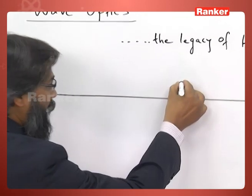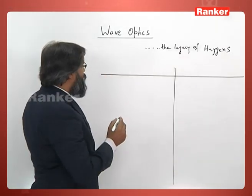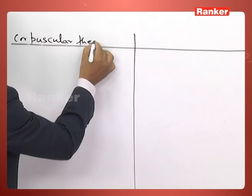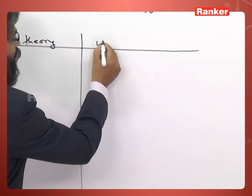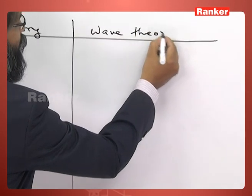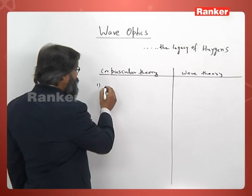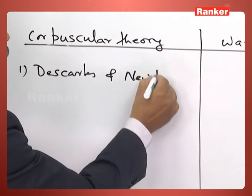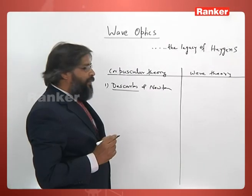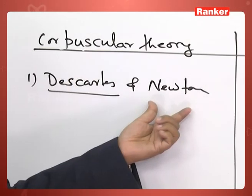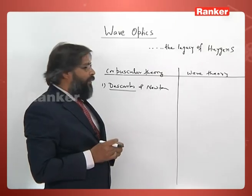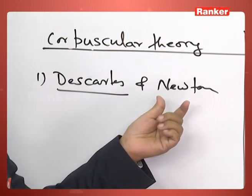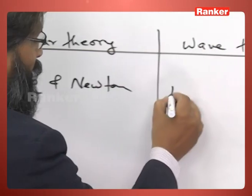We have two categories of theories: corpuscular theory and wave theory. The founders of corpuscular theory were Descartes and Newton. First, Descartes developed corpuscular theory, and Newton approved that theory in his famous optics book. Corpuscular theory was very popular and is generally attributed to Newton because of his stature.